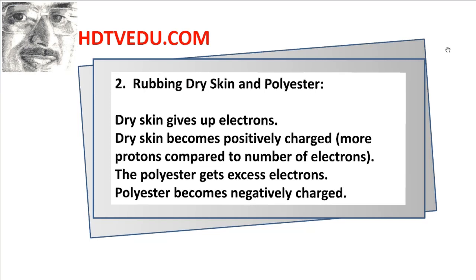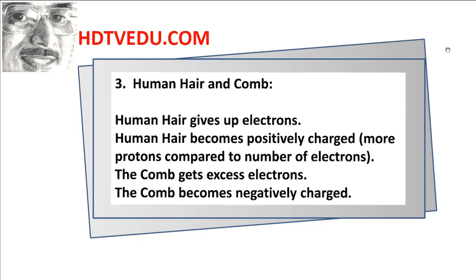Rubbing dry skin and polyester, the dry skin gives up electrons. When you give up electrons, you have more protons compared to the number of electrons, so the dry skin becomes positively charged. The polyester gets electrons and becomes negatively charged.